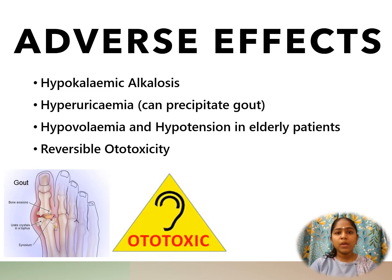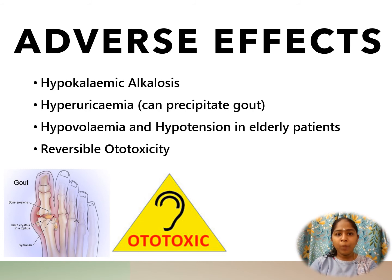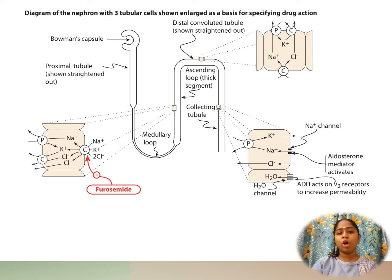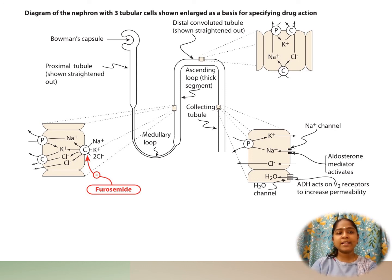Adverse effects: Furosemide causes hypokalemia and hypotension in elderly patients, and reversible ototoxicity. In summary, furosemide acts as a loop diuretic on the ascending limb of the loop of Henle, with its mechanism of action being the blockade of the sodium-potassium-chloride symport, producing increased urination and thus acting as a diuretic.